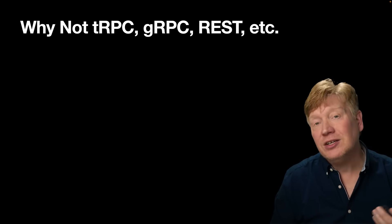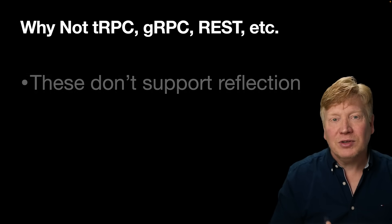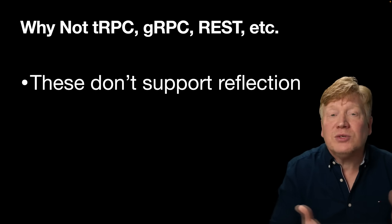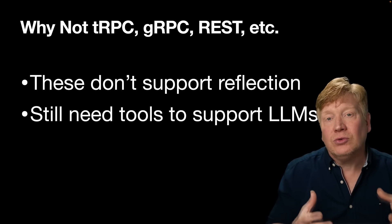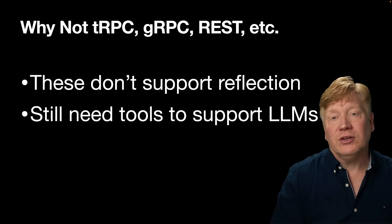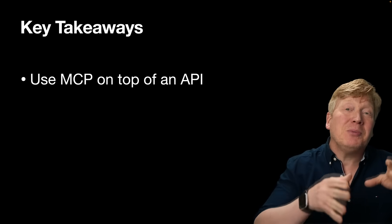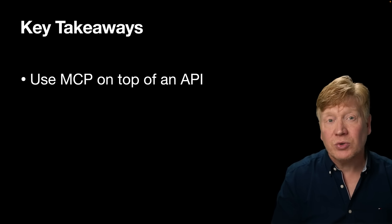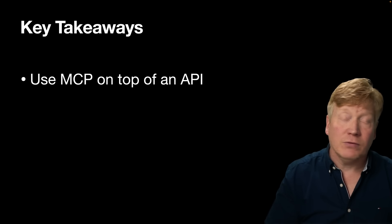What about other RPC mechanisms like tRPC or gRPC? These are all great, but they don't inherently provide reflection — there's no way for an AI model to directly connect to one and ask what tools and resources are available. You have to create that mapping layer yourself. This leads to the first key takeaway: you should use MCP in conjunction with a backend API, not as a replacement for it. Think of MCP as a more efficient user interface for the AI model, not a new generalized API standard for everything.